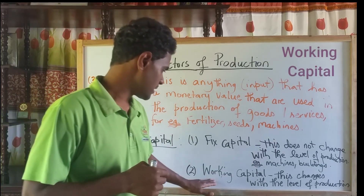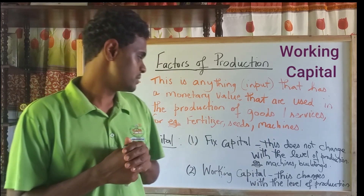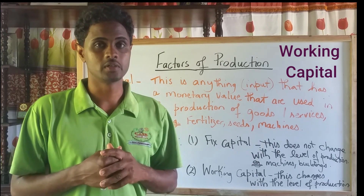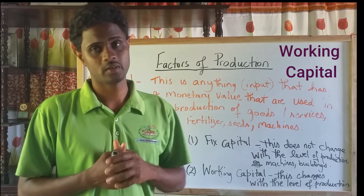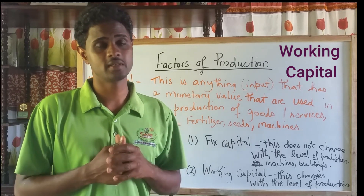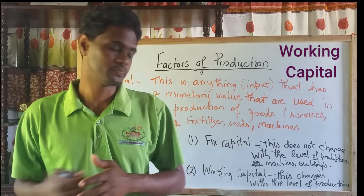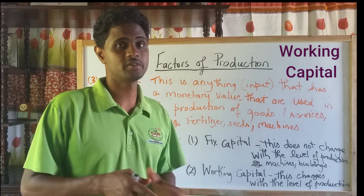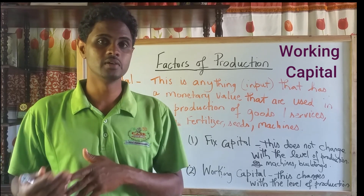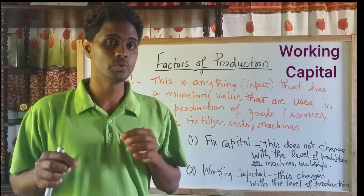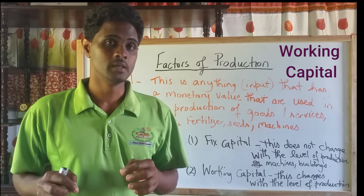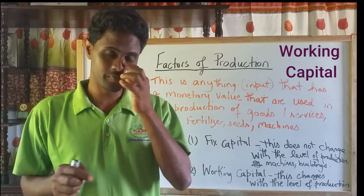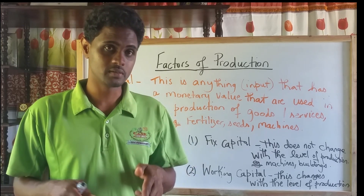Working capital is the inputs that change with the level of production — they are used up in production. For example, feed: the feed used to feed chickens will be converted to meat. Labor is also considered working capital, as the energy from the person caring for the animals goes into the production, and each time you want to produce chickens, you have to pay that person for that new work.